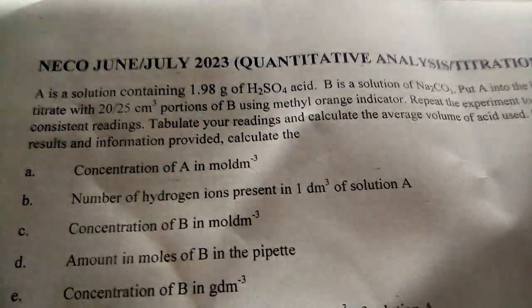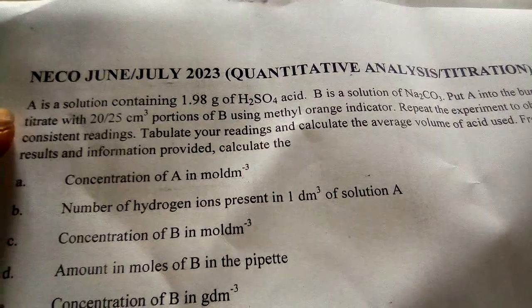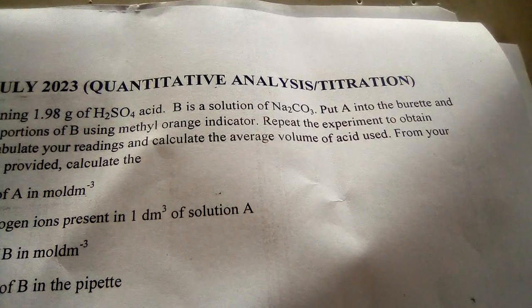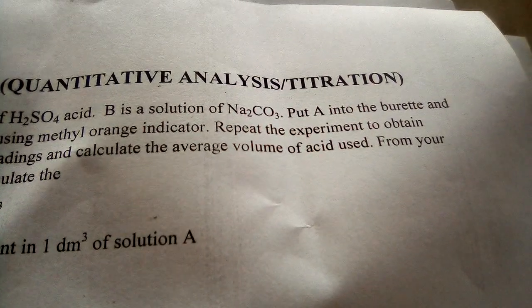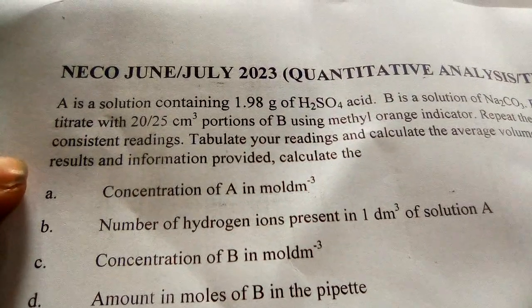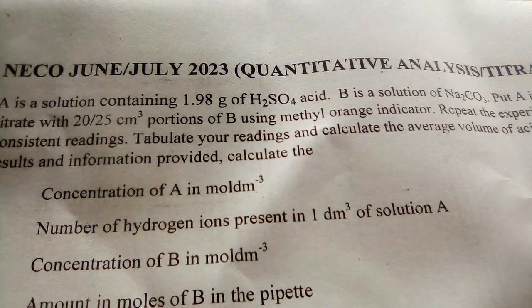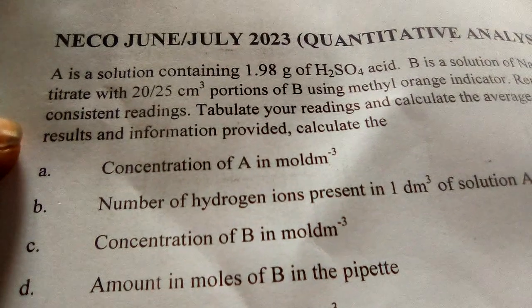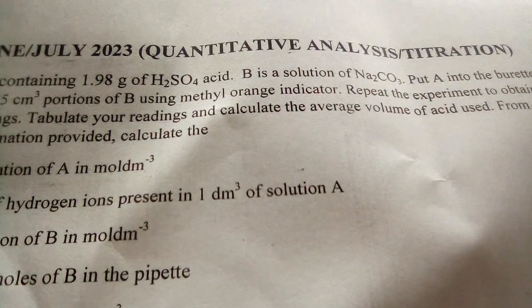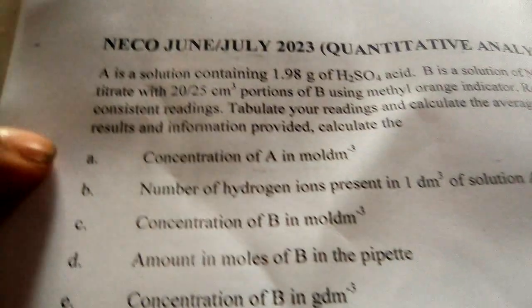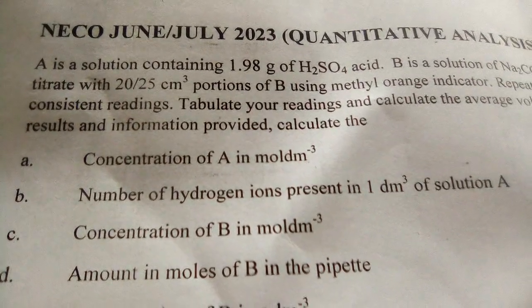Solution A is a solution containing 1.98 grams of H2SO4 acid. Solution B is a solution of sodium carbonate. Put A into the burette and titrate with 20 or 25 cm³ portions of B using methyl orange indicator. Repeat the experiment to obtain consistent readings, tabulate your readings, and calculate the average titre used.